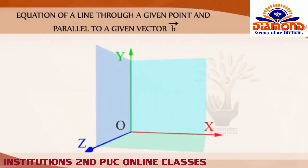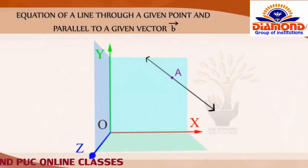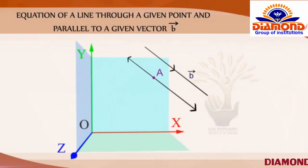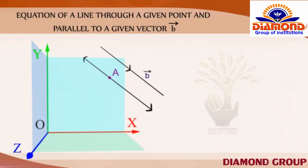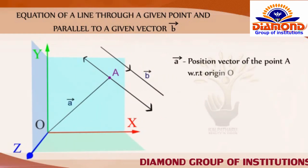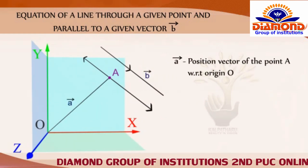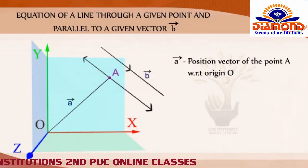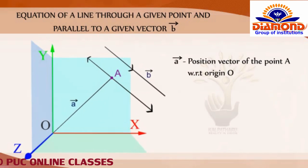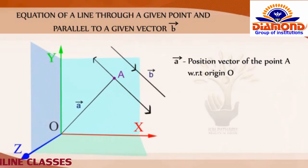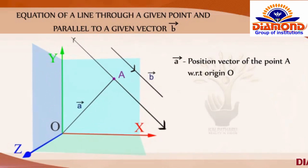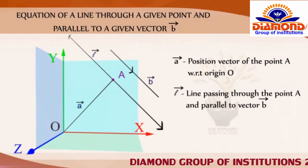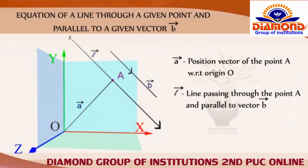Equation of a line through a given point and parallel to a given vector B bar. Let A bar be the position vector of the given point A with respect to the origin O of the rectangular coordinate system. Let L be the line which passes through the point A and is parallel to a given vector B bar.